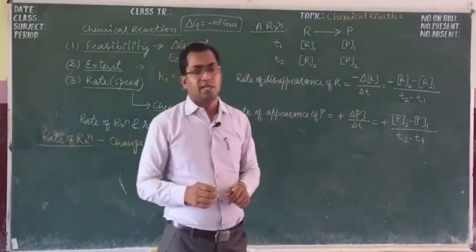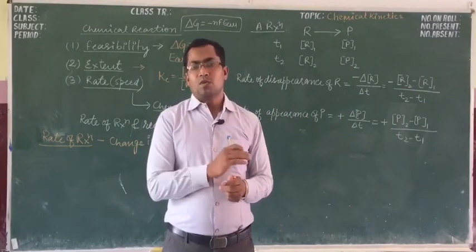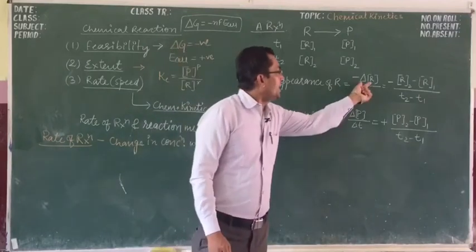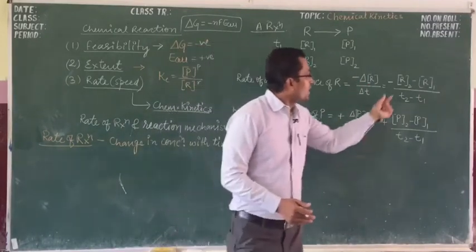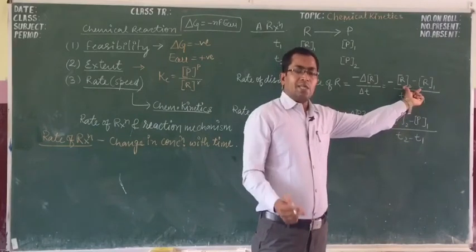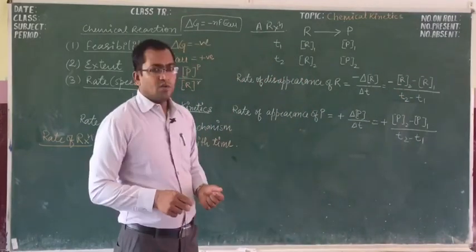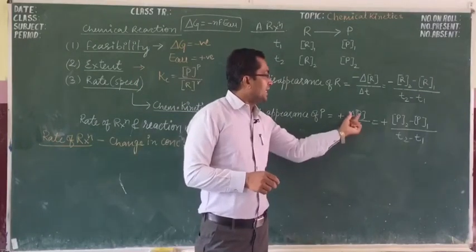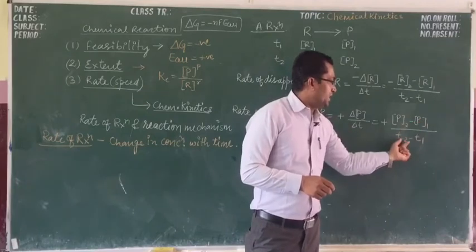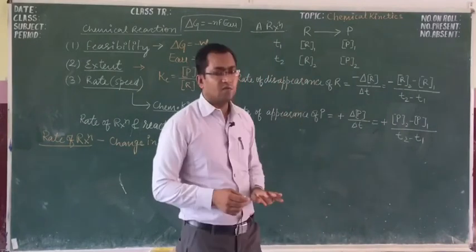Why do we put a minus sign here? Because the rate of reaction value is always positive — rate of reaction is never negative. The value of delta r that comes will already be negative because r2 is less than r1, so their difference is negative. To make this negative into positive, we multiply with the minus sign. Now for the rate of appearance of product: increase in the concentration of product divided by time taken, which is plus p2 minus p1 divided by t2 minus t1. Since this is already positive, this gives us our formula for rate of reaction.